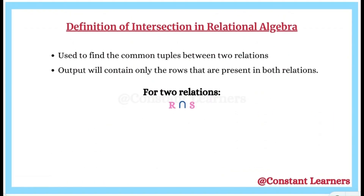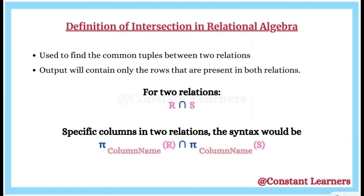Let's look at the general syntax for intersection of two relations R and S. The intersection of R and S is written as R intersection S. If you are dealing with specific columns in two relations, we use the projection operation first. So we project a column from relation R and a column from relation S, and then take the intersection of both projected columns.